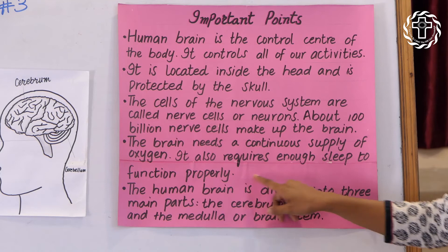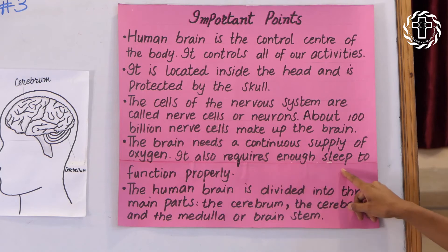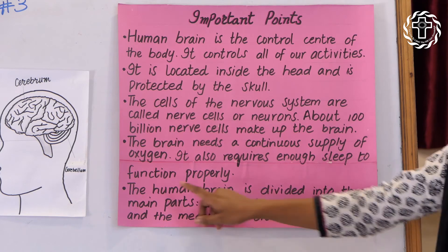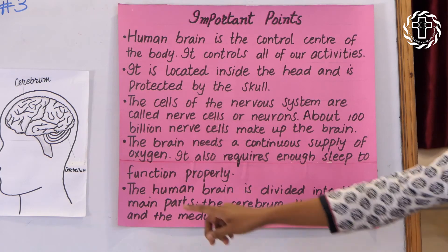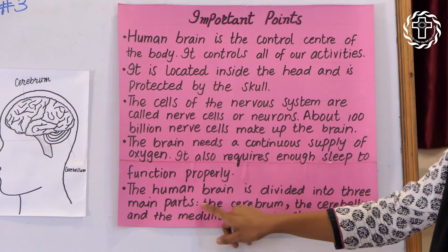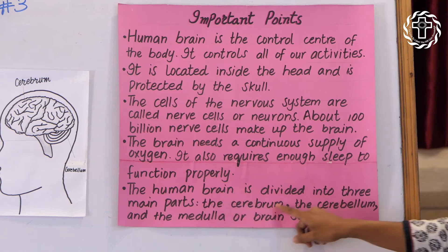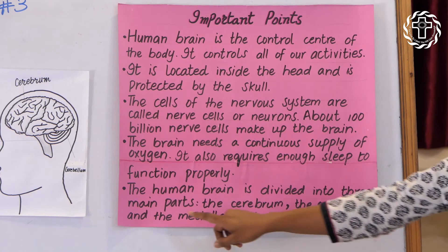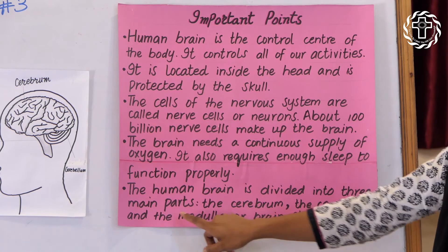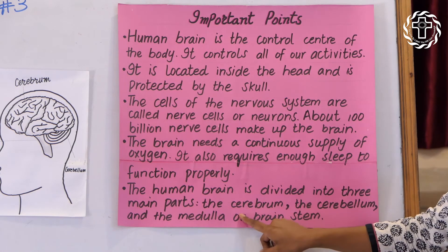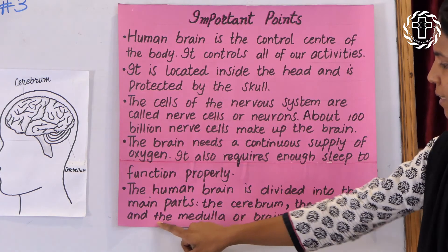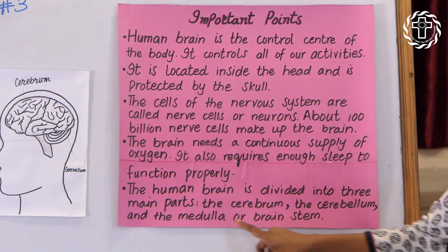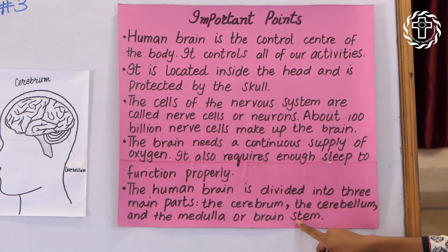The brain needs a continuous supply of oxygen. It also requires enough sleep to function properly. The human brain is divided into three main parts: the cerebrum, the cerebellum, and the medulla or brain stem.